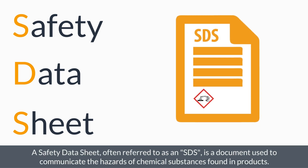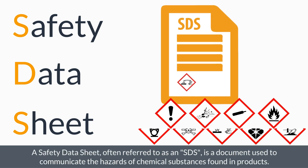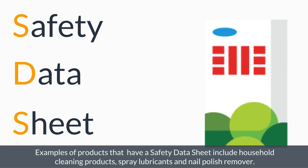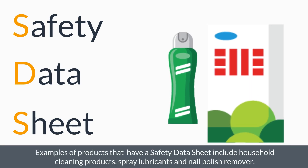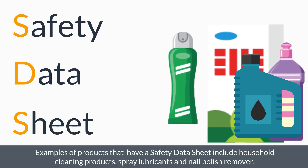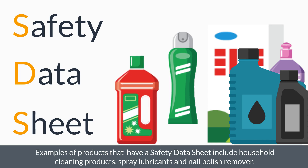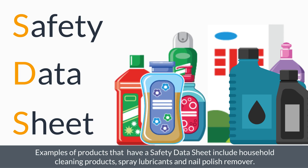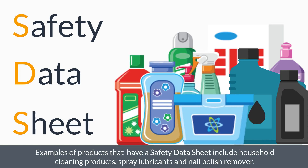A safety data sheet, often referred to as an SDS, is a document used to communicate the hazards of chemical substances found in products. Examples of products that have a safety data sheet include household cleaning products, spray lubricants, and nail polish remover.